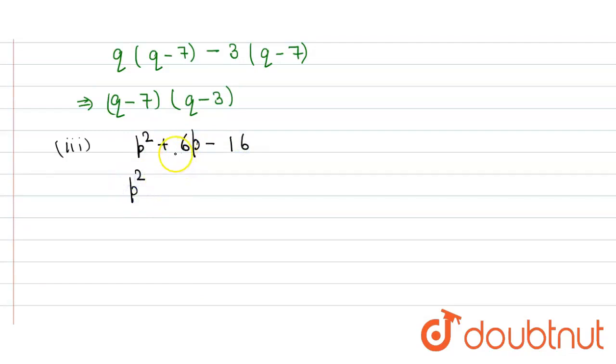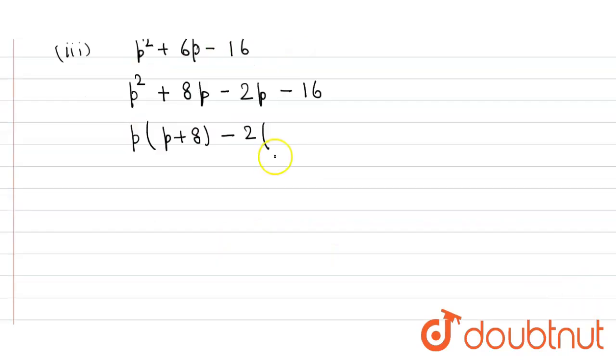Now we take common p from the first two terms, so we get p(p + 8), and from the last two terms we get -2(p + 8).